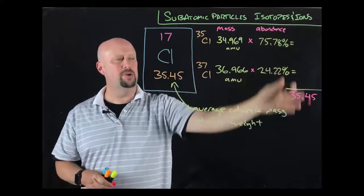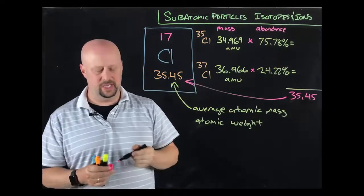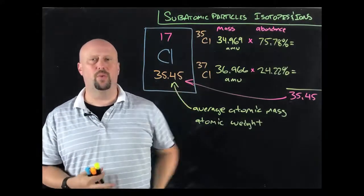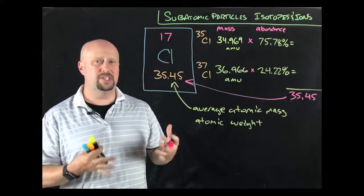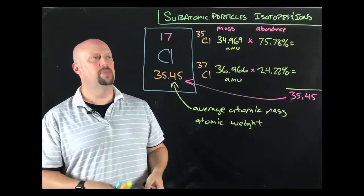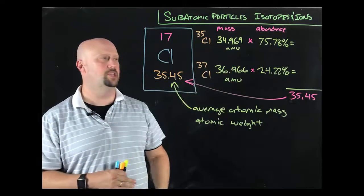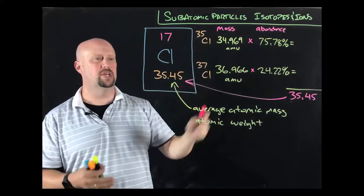And when we add them up, we are going to get that number that's on the periodic table. For every atomic weight on the periodic table, or every average atomic mass on the periodic table, that's exactly how they're found. We take many, many samples of them. We find out what different isotopes are in them. What's the mass of each of those isotopes. We find their abundance and we multiply them all together and you get those numbers.